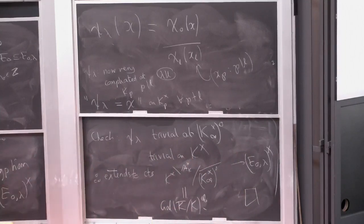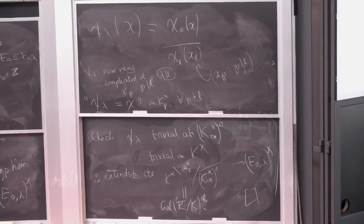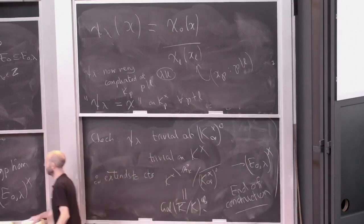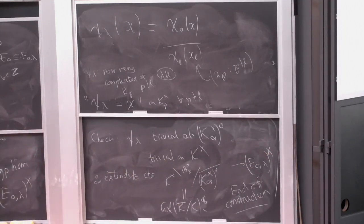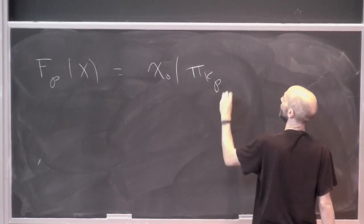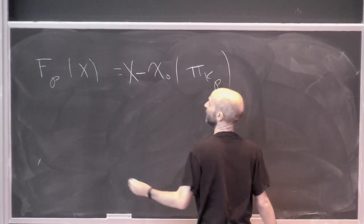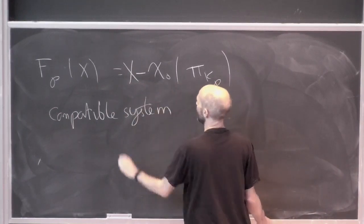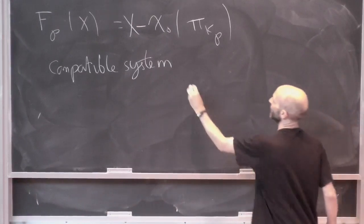I'm sick of this proof. It's compatible — you just check everything else is easy; that was the hard part. The local polynomial f_p(x) is just chi-zero of a local uniformizer at p, or x minus that. End of construction.